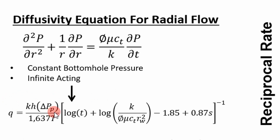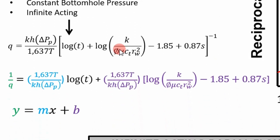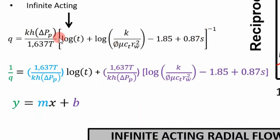Assuming bottom hole pressure stays constant throughout the infinite acting production region, for gases we use pseudopressure — you can open a textbook to read why. The key point is you can rearrange this equation into the form of a straight line. Take the reciprocal of both sides and distribute the terms to get it in the form y = mx + b: y is reciprocal rate, slope is this term, x is log of time, and the intercept is this purple term.